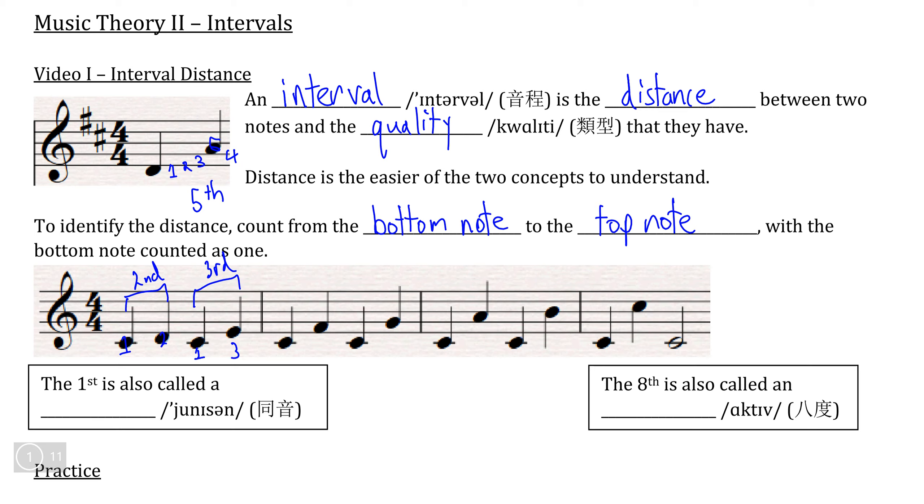The distance between C and F, if you count C, D, E, F, we count it up four times. So this would be called a fourth.